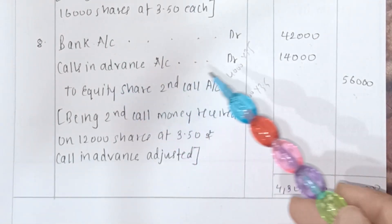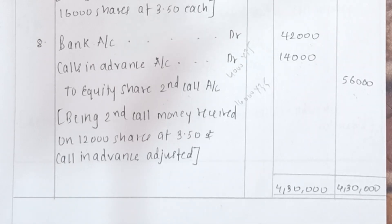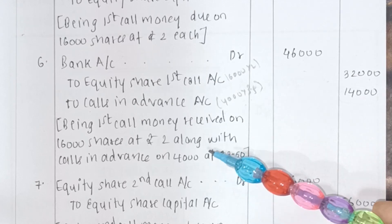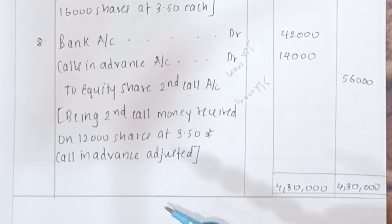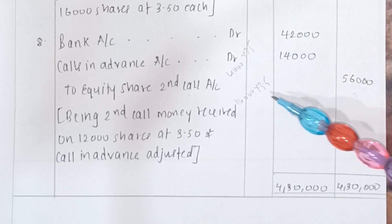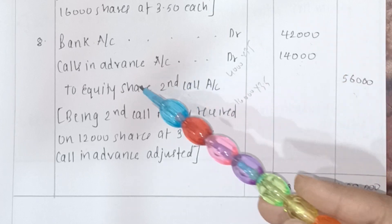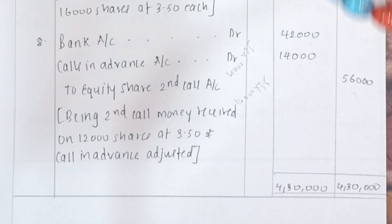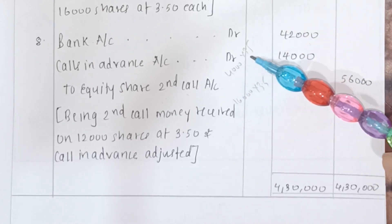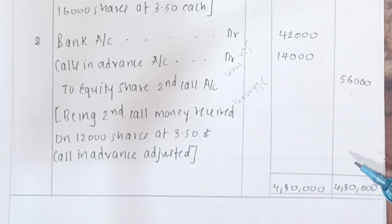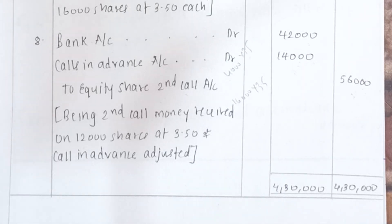You will notice that calls in advance was recorded on the credit side initially, and now in the last entry it is on the debit side because we are adjusting it. To summarise: Rs 56,000 came from 16,000 into Rs 3.50; calls in advance of Rs 14,000 can be taken directly or calculated as 4,000 into Rs 3.50; subtracting gives Rs 42,000 for the bank. After finishing all entries, total the debit and credit sides — both sides total Rs 4,30,000. This was one problem on calls in advance.